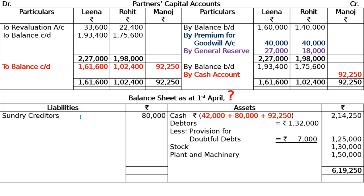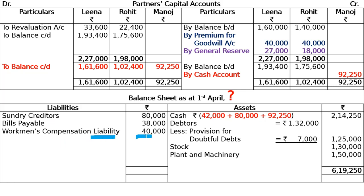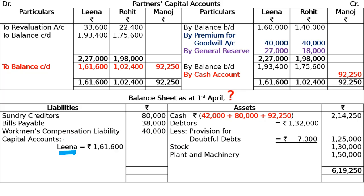On the liability side: sundry creditors and bills payable remain as is. Workman compensation liability is added — whatever the claim amount, that is written as increase in liability. General reserve shown at 45,000; provision for doubtful debts of 5,000 is on the liability side. Capital accounts for Lena, Rohit, and Manoj show the new capitals. Total of balance sheet = 6,19,250.